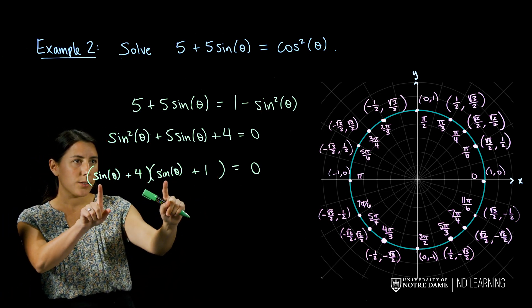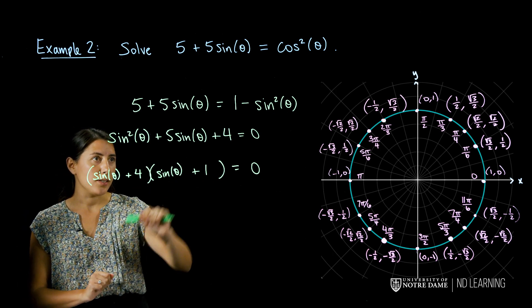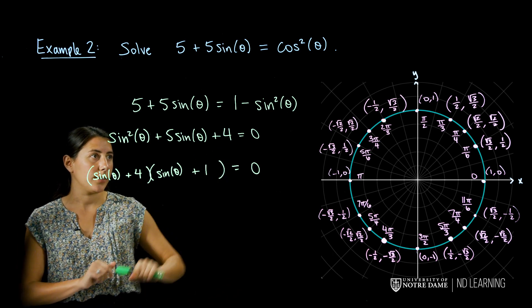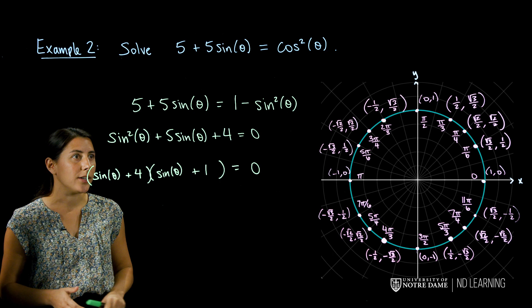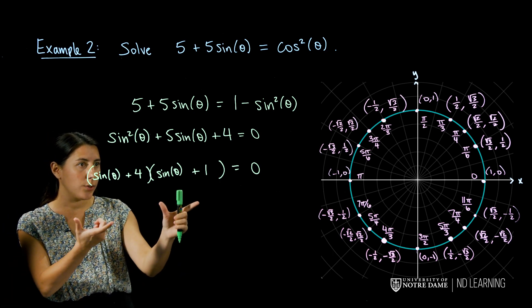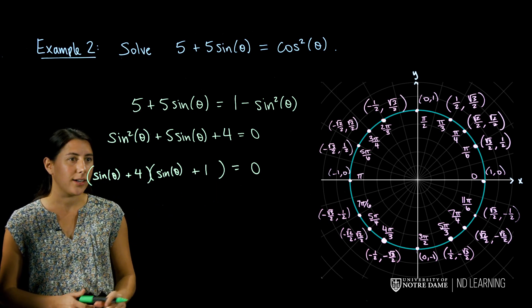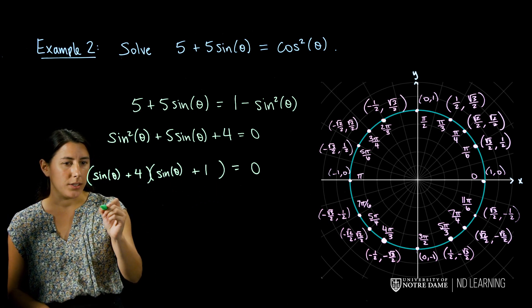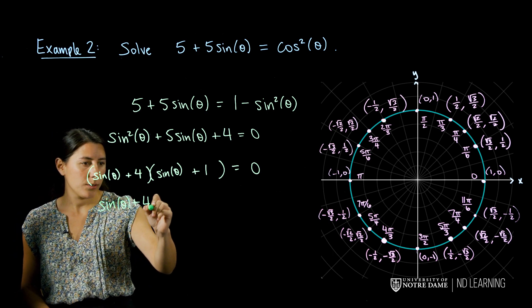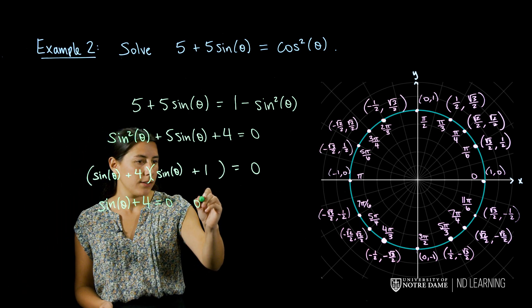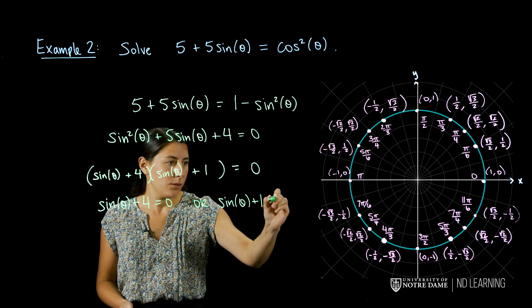So just checking this, our first term will be sine squared. 4 sine theta plus 1 sine theta is my 5 sine theta. And then 4 times 1 gives me that plus 4. Alright, so we factored our quadratic trigonometric equation into two linear terms. And these multiply to 0 exactly when one of these terms is equal to 0. So that means either sine of theta plus 4 was equal to 0 or sine of theta plus 1 was equal to 0.